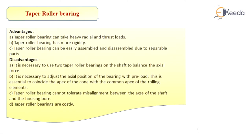The next category is taper roller bearing. It consists of rolling elements in the form of a frustum of a cone, arranged so that the axes of the conical rolling elements intersect at a common apex point on the axis of the bearing. Taper roller bearings can carry both radial and axial loads and are always used in pairs to balance the thrust component. The construction is separable: the outer ring is called the cup and the inner ring is called the cone. Advantages include: ability to take heavy radial and thrust loads, high rigidity, and easy assembly and disassembly due to separable parts.